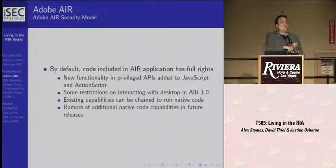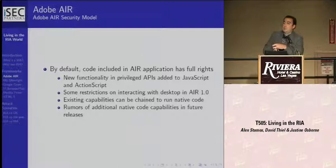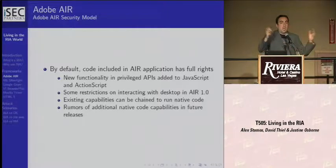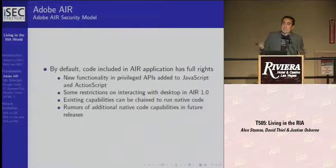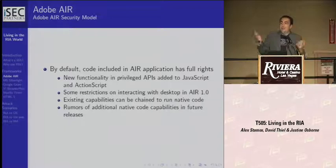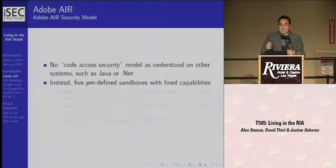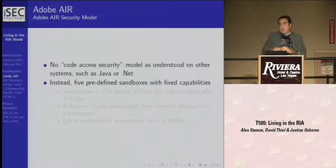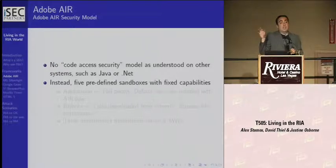By default, the code that runs in an AIR application runs with full rights. They've added a bunch of classes to JavaScript or ActionScript to do dangerous things like talk to files locally and install in program files — you can write stuff over Windows System32 and such. With the existing capabilities in AIR 1.1, it is possible to make a local system run native code and backdoor an operating system.